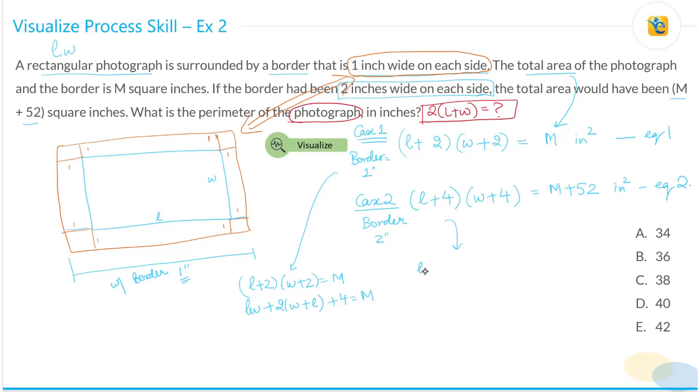Let's simplify this. L plus four times W plus four is equal to M plus 52. Let's open LW plus four into W plus L plus 16 is equal to M plus 52.